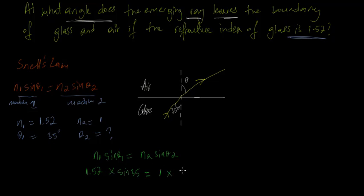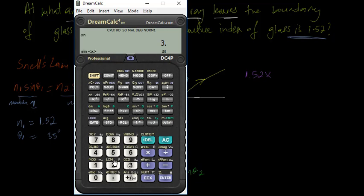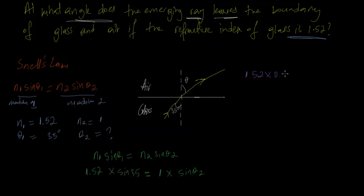So that's our expression. Let me just change color here. Let's rewrite. So we have 1.52 multiplied by the sine of 35. Let me just find it right now. So we say sin 35, that equals 0.574. So 0.574, that is equal to 1 multiplied by sin θ₂, so we can just say sin θ₂.